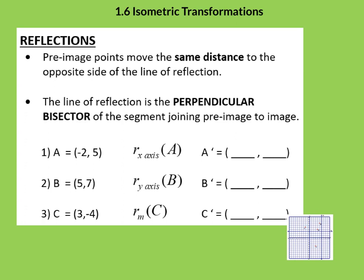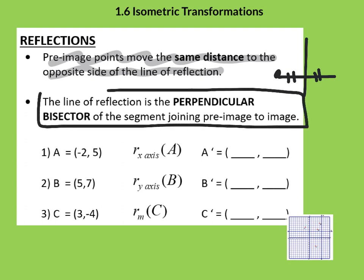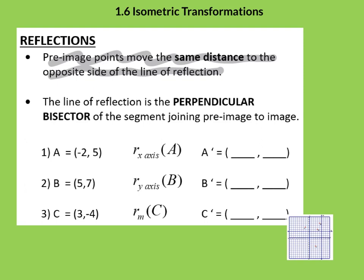We know that pre-image points move the same distance to the opposite side of the line of reflection. So that idea that when you reflect, this distance is the same across the line on the other side. We also know that the line of reflection is a perpendicular bisector between them. So having said that, let's take a look at doing some of these.